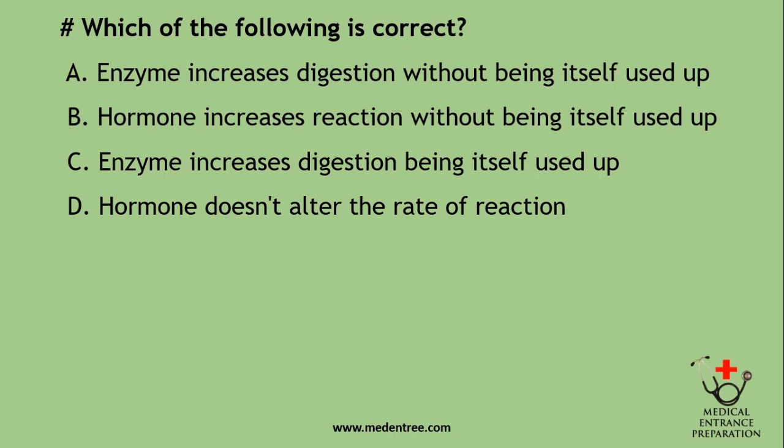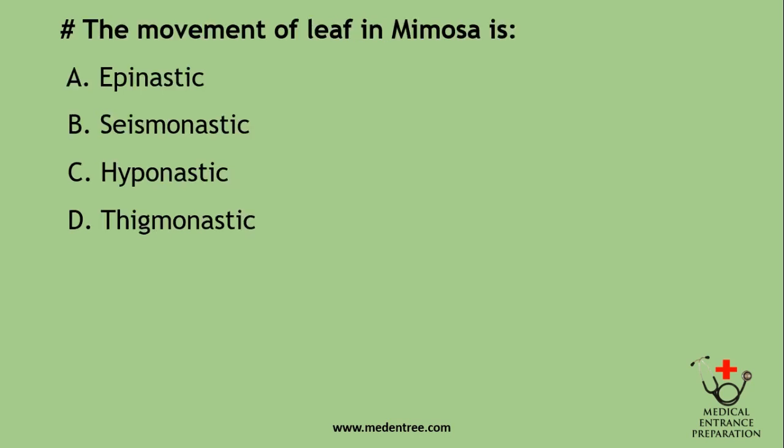Which of the following is correct? Enzyme increases digestion without being itself used up; Hormone increases reaction without being itself used up; Enzyme increases digestion being itself used up; Hormone doesn't alter the rate of reaction. Both hormone and enzyme alter the rate of reaction, but the key difference is that an enzyme increases digestion without being itself used up — it only catalyzes the reaction.